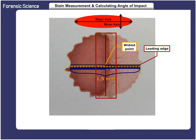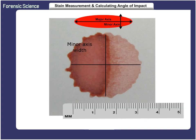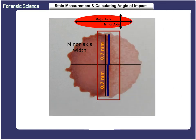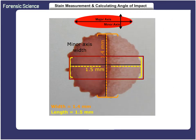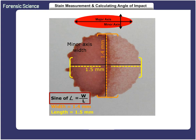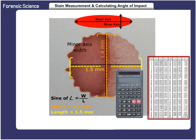Now it's time to determine the width of the stain. The device used here to measure the minor axis width is a metric ruler. The stain width is 1.4 millimeters, and the stain length is 1.5 millimeters. With this information, we can now determine the angle of impact using the formula: the sine of the angle equals the width divided by the length. We can calculate the angle of impact by either using a scientific calculator or a trigonometric chart.